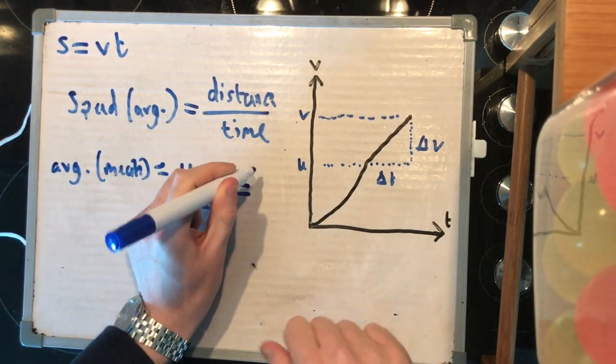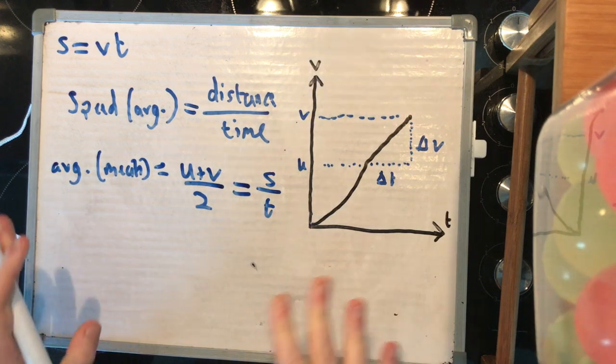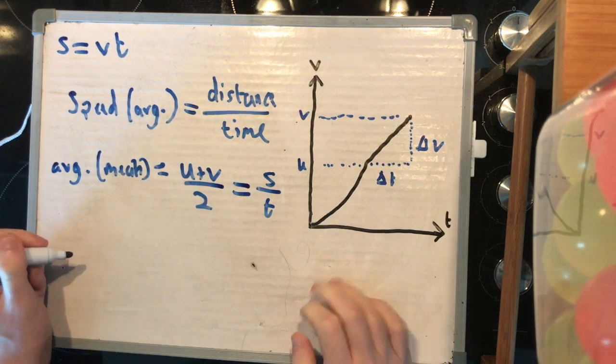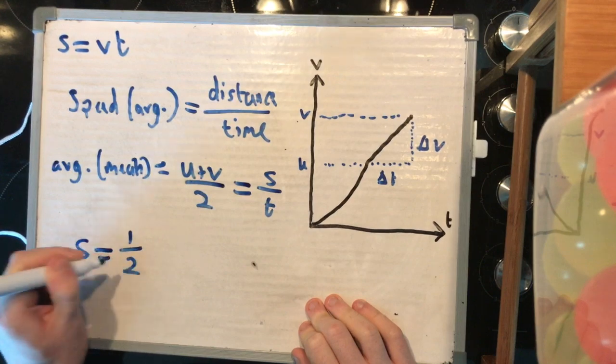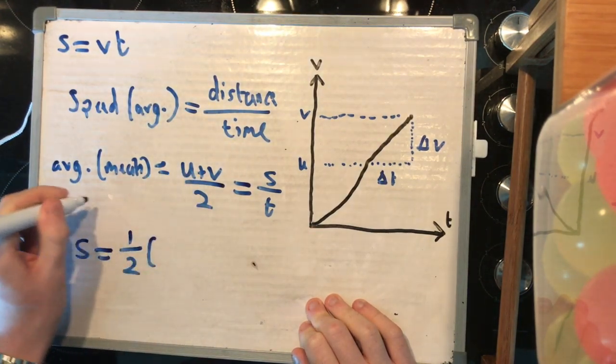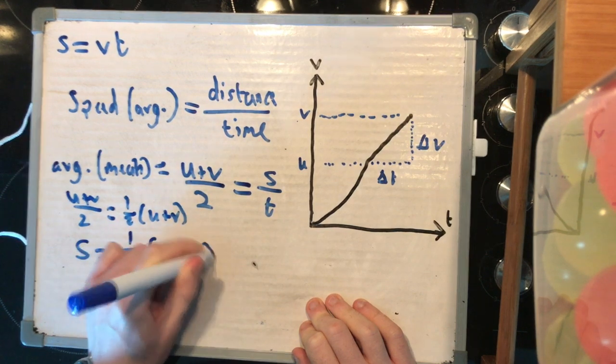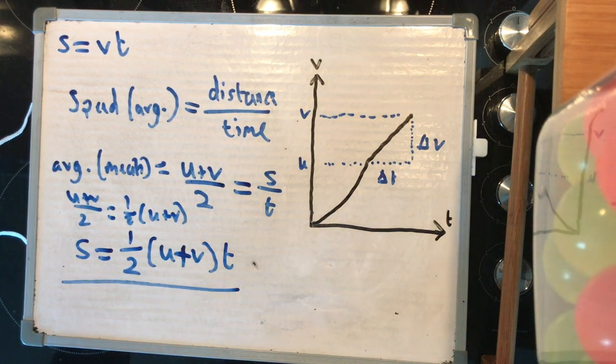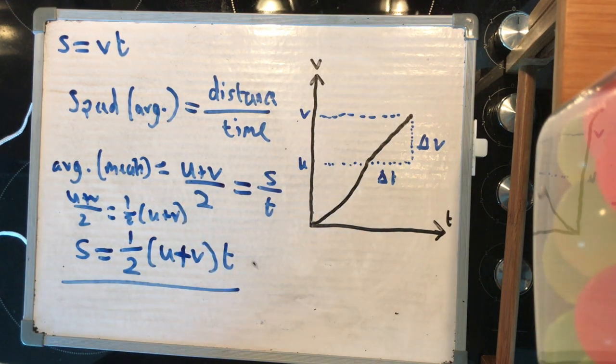So, my average, or my mean, is equal to u plus v, and then divide by how many I've got, u plus v over two. And that is now equal to s over t. Now, I know there's a bit of swapping over of terminology. It's not a perfectly clean derivation. But, if I now multiply by t, and move this over two to be a half separately, I get s is equal to a half u plus v in a bracket, and then we multiply through by t. And that's our second SUVAT.